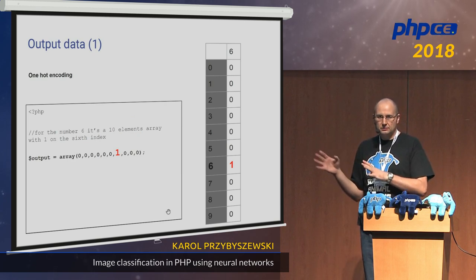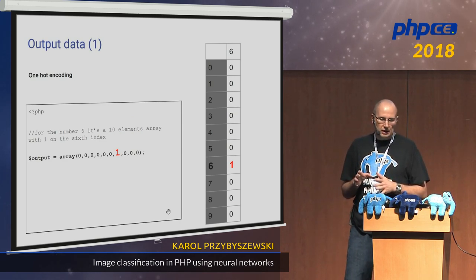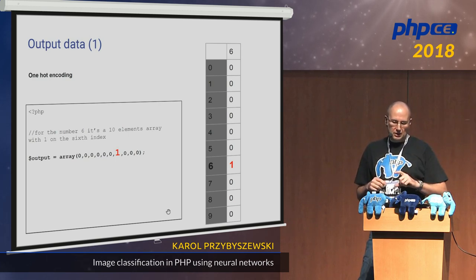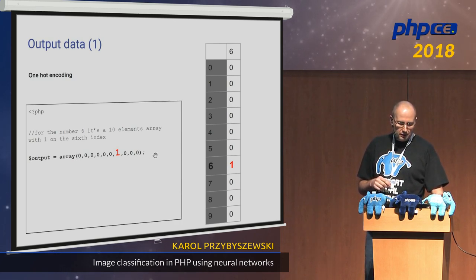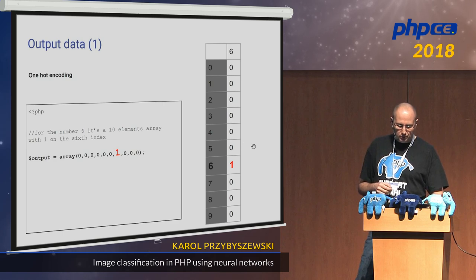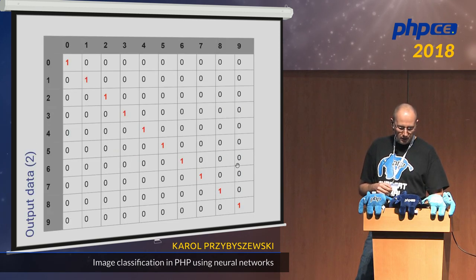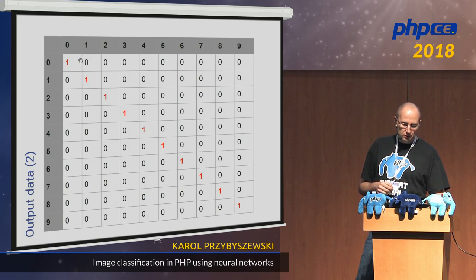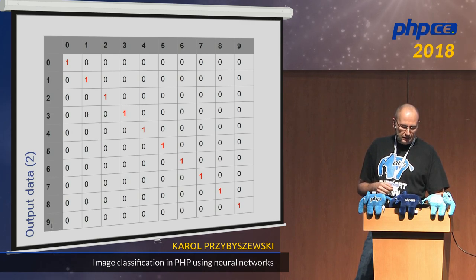The output data uses something called one-hot encoding. Since we have ten classes from zero to nine, we have a ten-element array. If we want to represent the number six on the output, we put a one at the sixth index and all other indexes are zeros. For number one, you put a one at index zero and the rest are zero, and so on for all numbers. The number nine has the one set only on the ninth index.